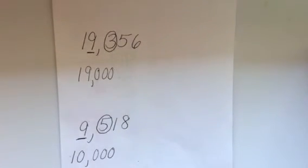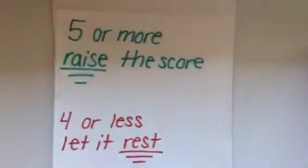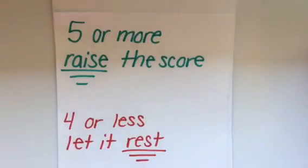When you're rounding, remember: underline the place that you're rounding to, circle the one directly to its right, and then five or more raise the score, or four or less let it rest. Good luck on your rounding.